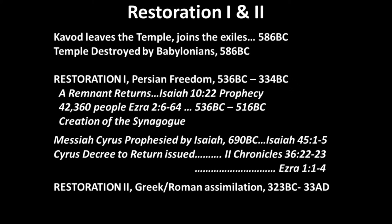The kavod, or glory of God — the Shekinah, as the rabbis call it, which is not a biblical word — leaves the temple and joins the exiles over the Mount of Olives in 586 BC. Ezekiel saw this vision. The temple was then destroyed by the Babylonians in 586 BC — they burned it to the ground and carted off many of the holy vessels to Babylon. We see those vessels reappear the evening before Cyrus the Great and his captain Darius go through the Tigris River through the Ishtar Gate, with a fifth column waiting to help subdue the Babylonians. Belshazzar, the grandson of Nebuchadnezzar, sees the handwriting on the wall.